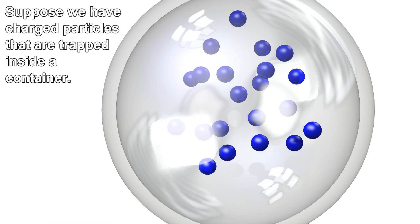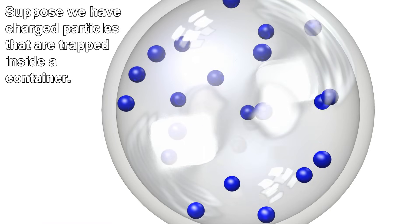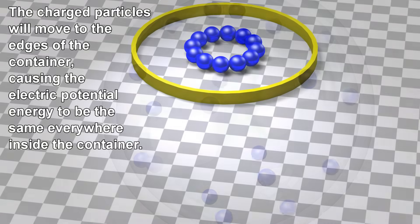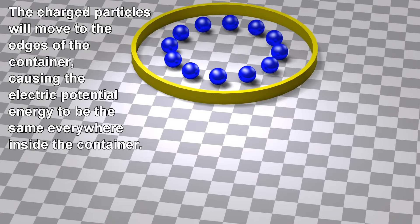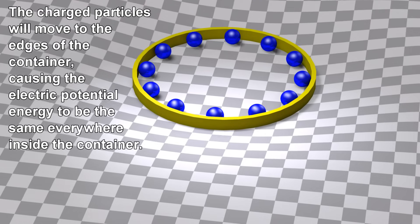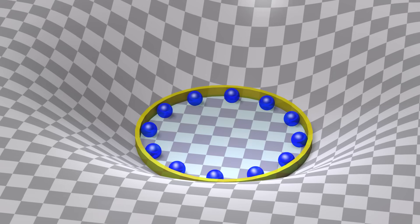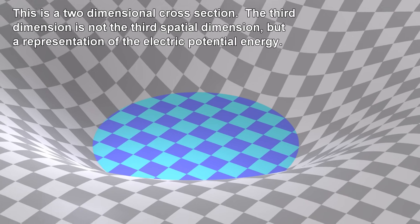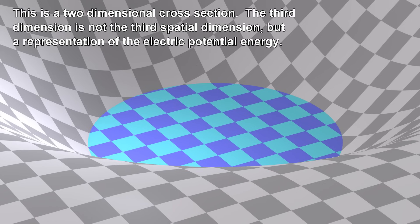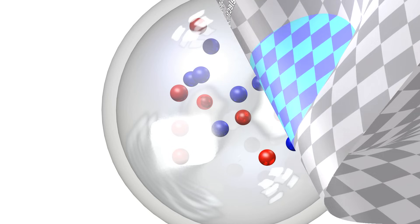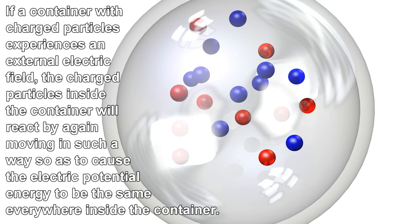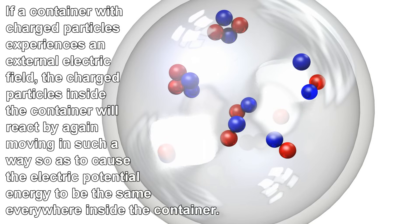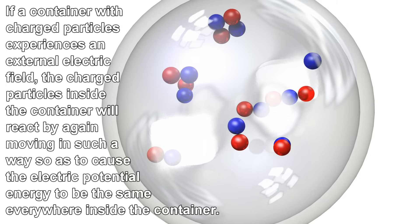Suppose we have charged particles that are trapped inside a container. The charged particles will move to the edges of the container, causing the electric potential energy to be the same everywhere inside the container. The charged particles inside will react by again moving in such a way so as to cause the electric potential energy to be the same everywhere inside the container.